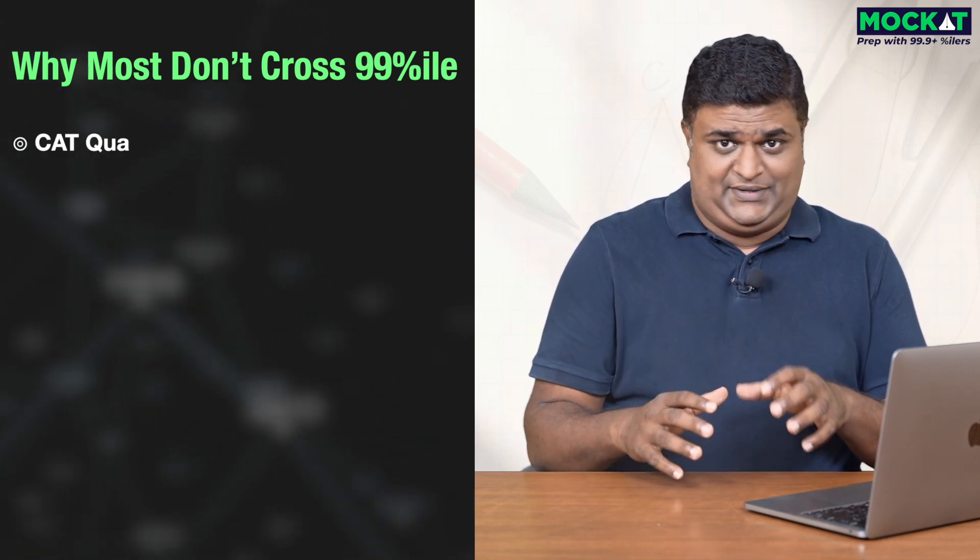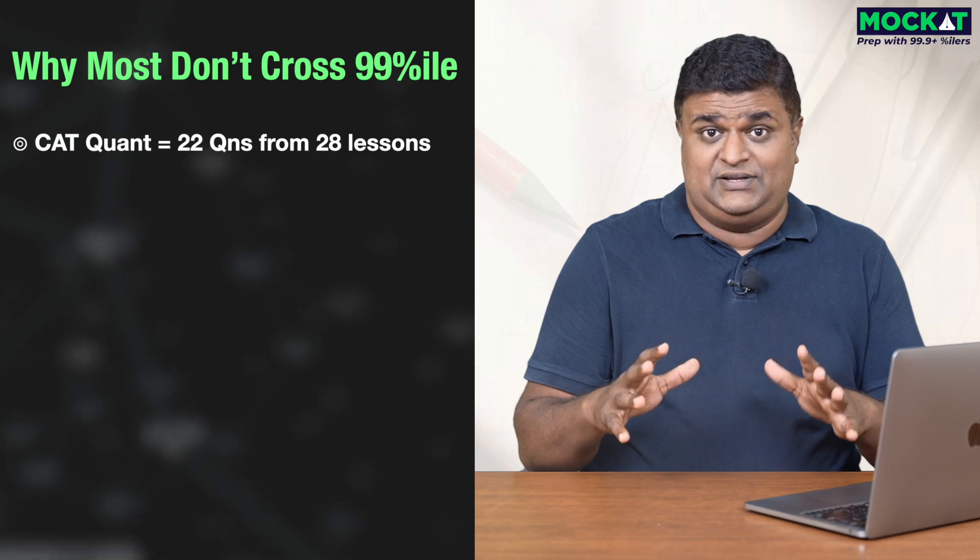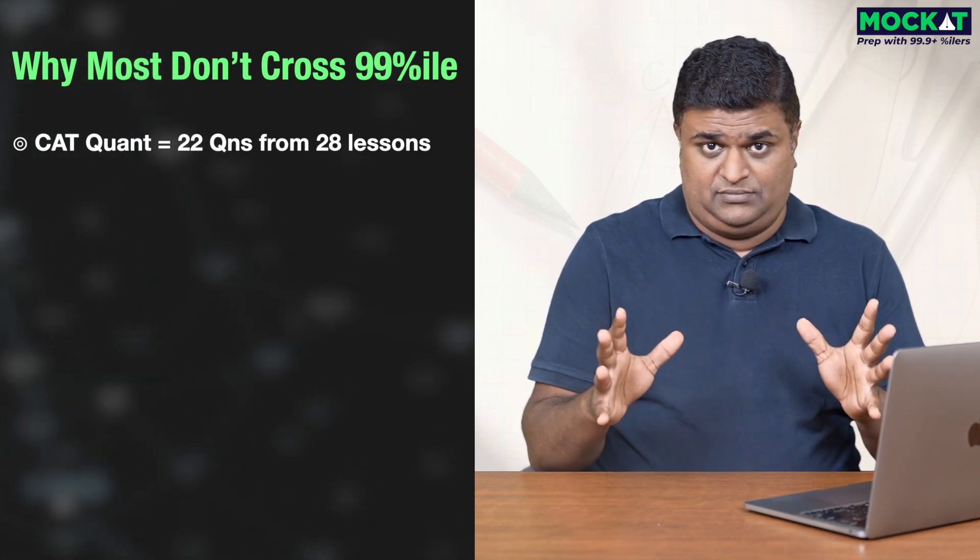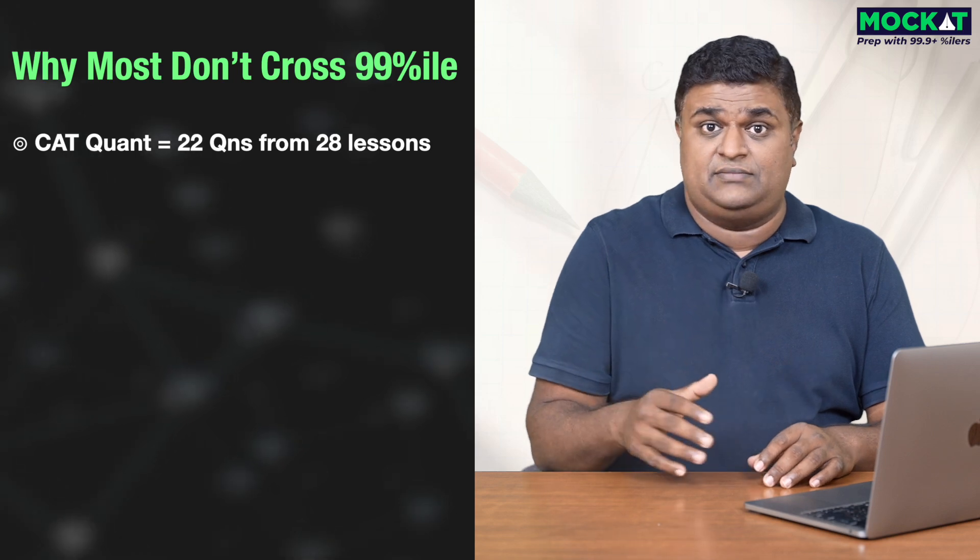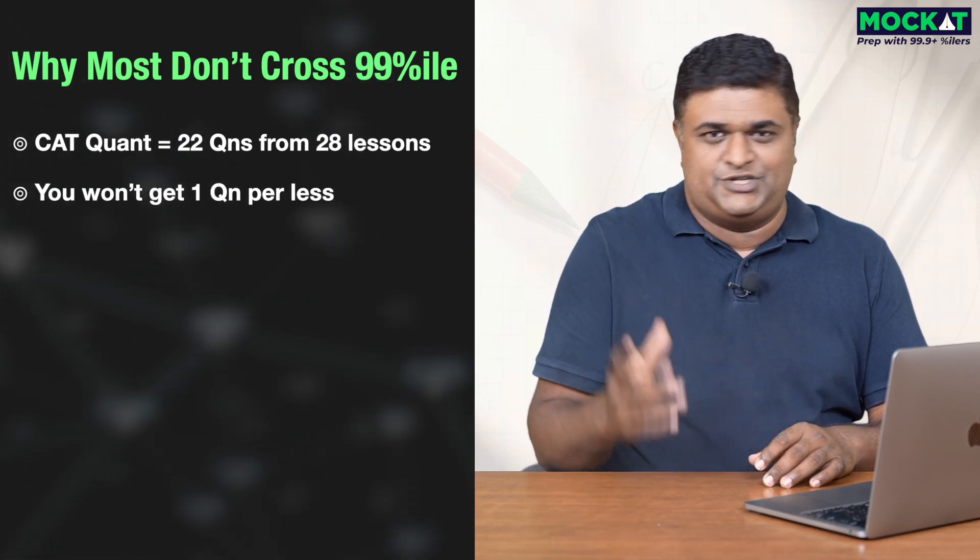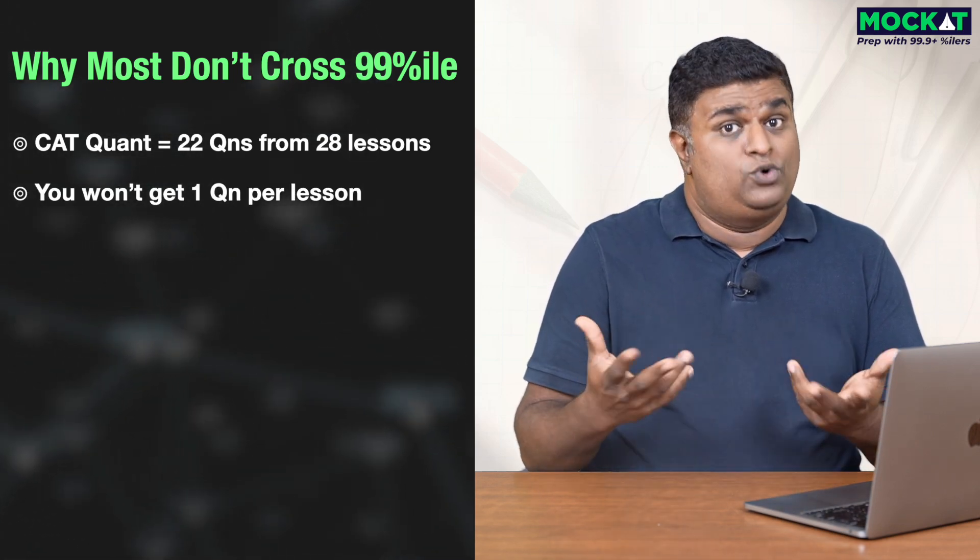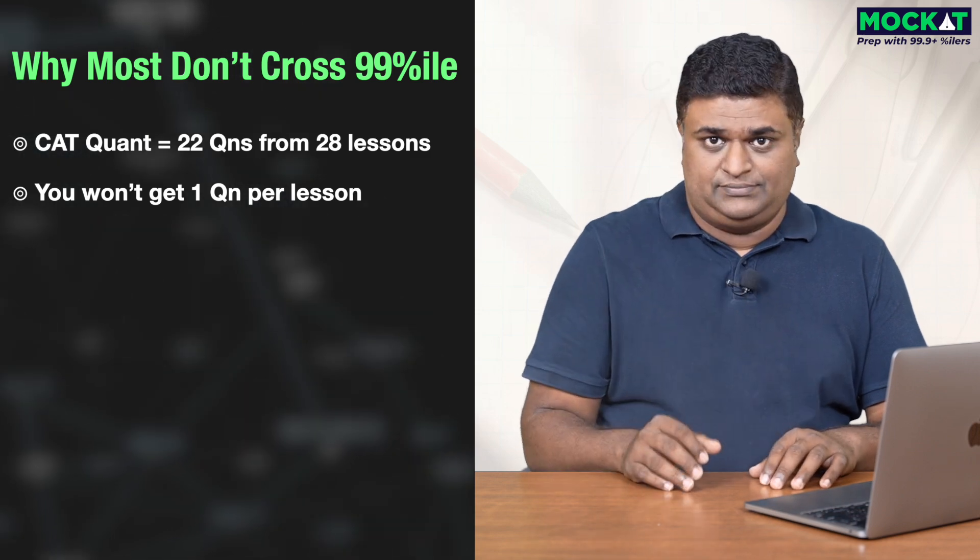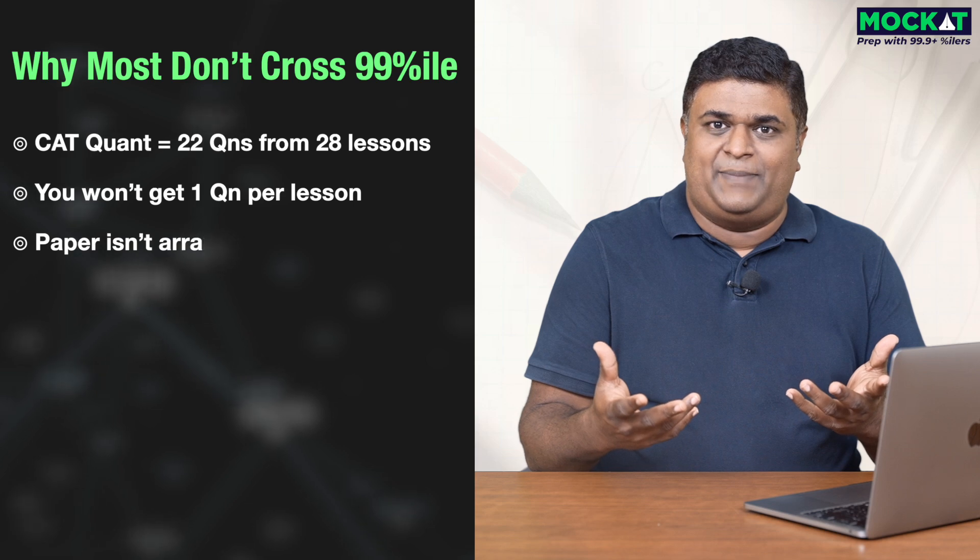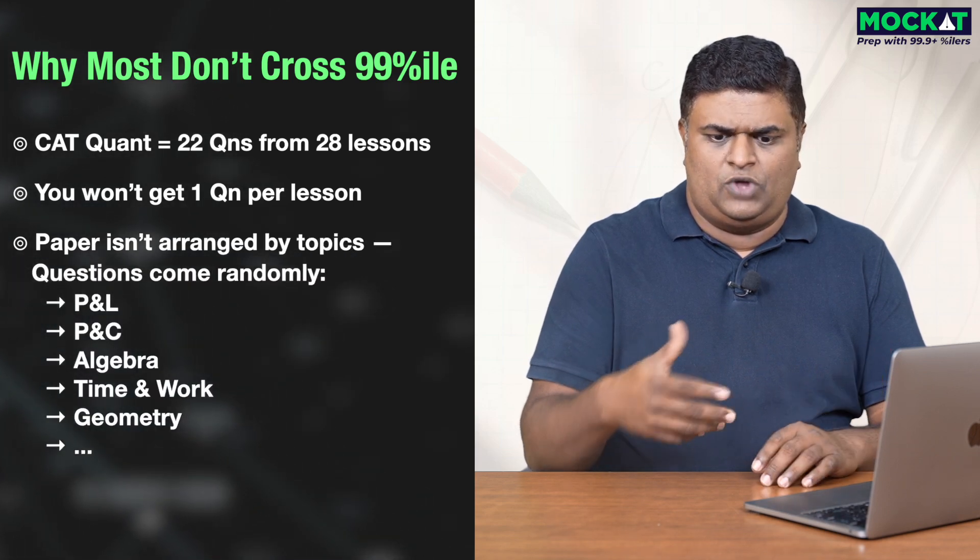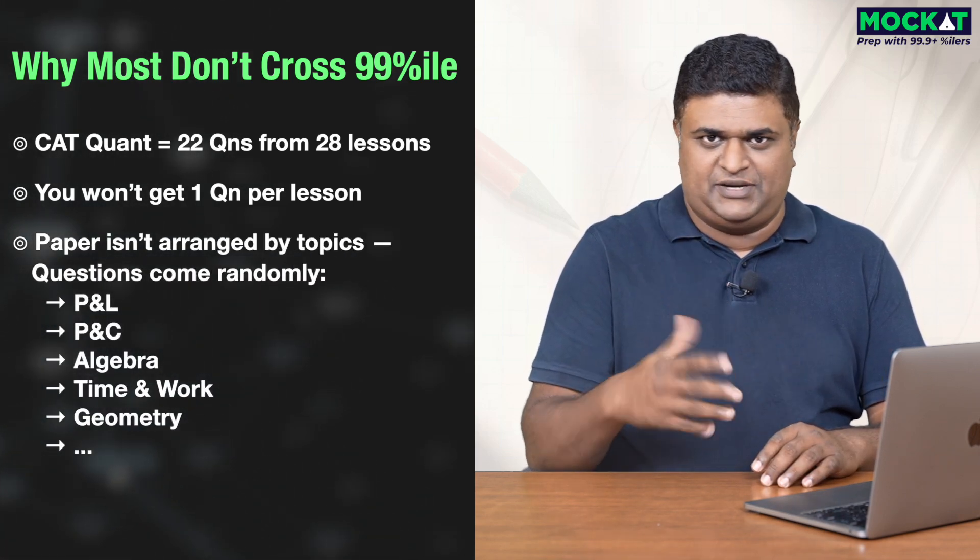Now, in the CAT exam, you're going to have 22 questions, but the number of lessons are also around 20 to 28. We have 28 lessons. Are you going to get a question from each lesson? No. Some of those lessons you wouldn't get. Would you be getting about 4 to 5 questions from each lesson? Definitely not. You'll get one or max two. So, what is going to be the pattern for your exam? You're not going to be getting all the arithmetic questions first, followed by algebra and so on.